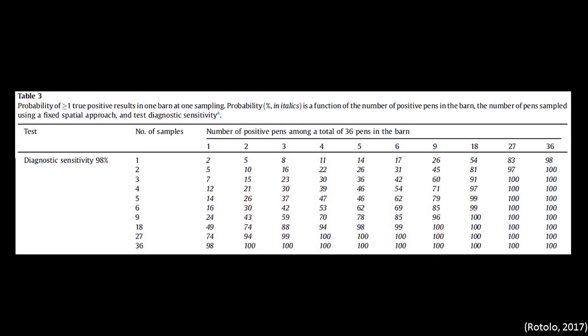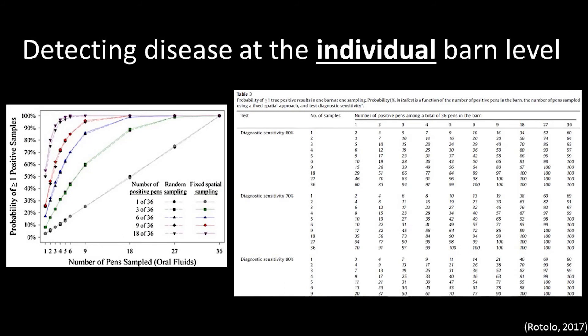The probability of disease detection based on prevalence and sample size can also be found in Table 3 of Dr. Rotolo's paper on oral fluid sampling guidelines. These tables and graphs can be used by producers and veterinarians to determine the probability of detecting infection in one barn.